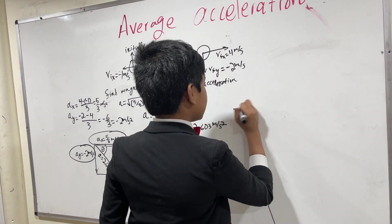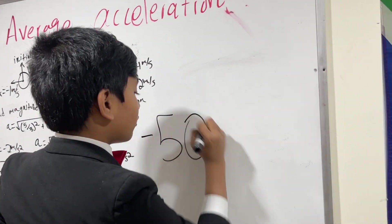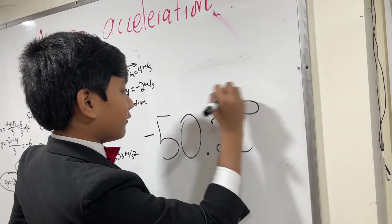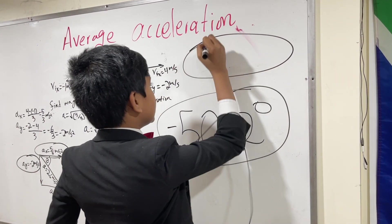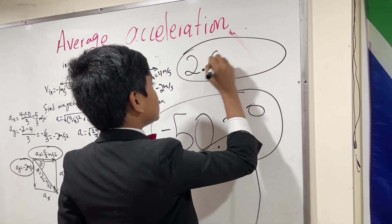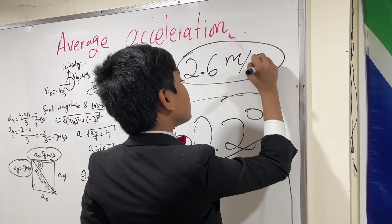we have theta is equal to arctan of negative 6 over 5, which is negative 50.2 degrees. That is it. And let's actually write that bigger so you all can see. Negative 50.2 degrees. And the acceleration is 2.6 meters per second squared. That's it.